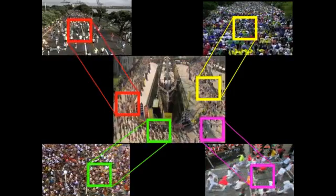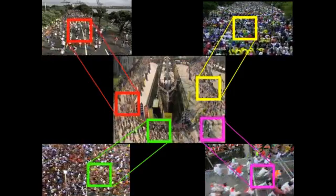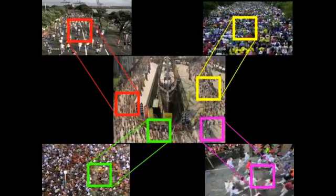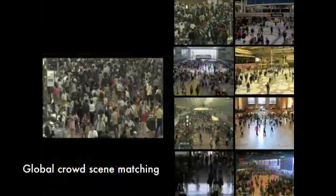Here we see an example of how a crowded marathon video contains regions that are similar to other crowd videos. We start with an input video and proceed to obtain a set of coarsely matching crowd videos retrieved from the large crowd database.